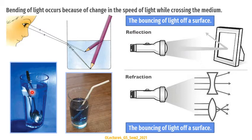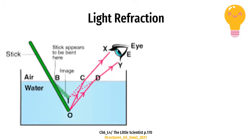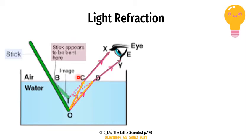As light rays from the lower part of the spoon go from water into the air, they change their direction, causing the spoon to appear broken. To see a stick in the water, the stick reflects light to our eyes. When the light rays pass from the water to our eyes, they change their direction. Here are the light rays reflected by the stick — they bend when they leave the water, so the stick appears to be bent and broken. This is the image of the stick.